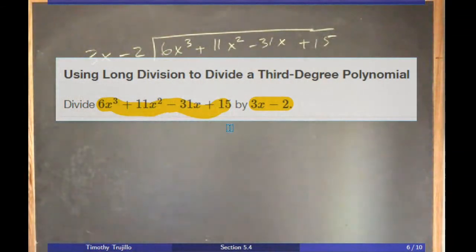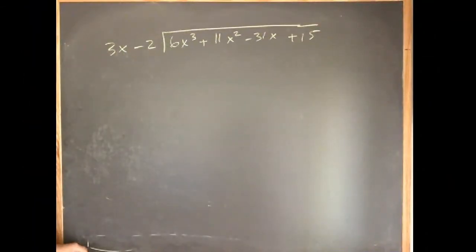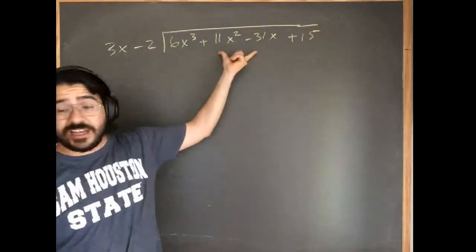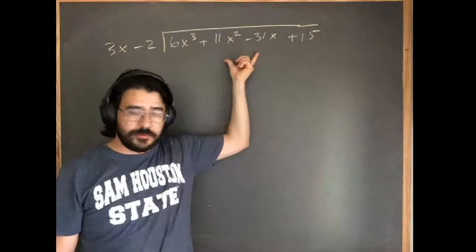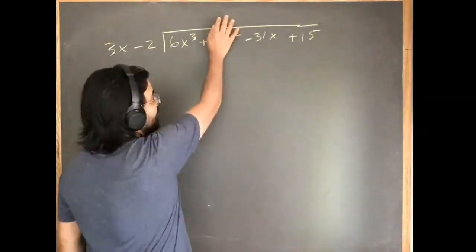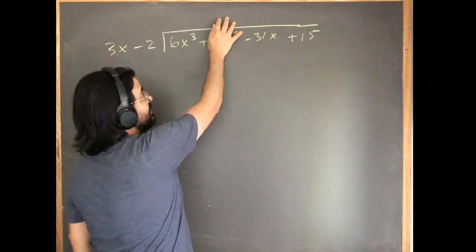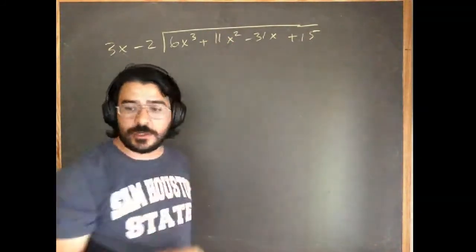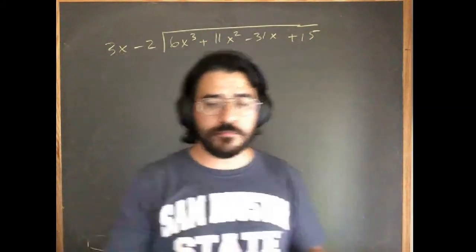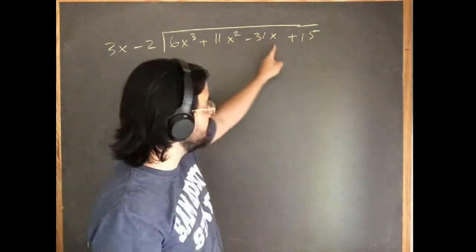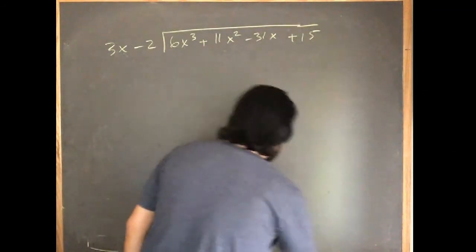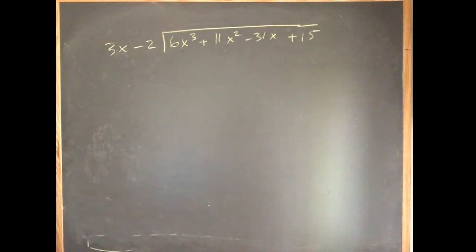Before running the algorithm, note an important setup rule: the dividend must contain every degree term. If a term is missing — like if there were no x² term — you must insert it as 0x². Without those placeholder zeros, terms won't line up correctly and your algorithm will fall apart. In this example all terms are present, so we can proceed.